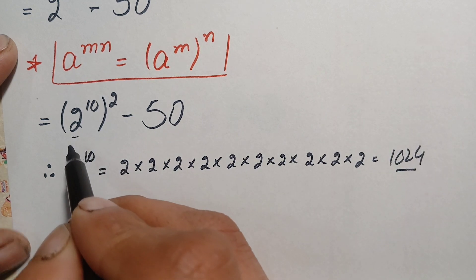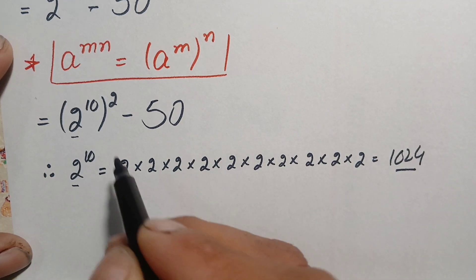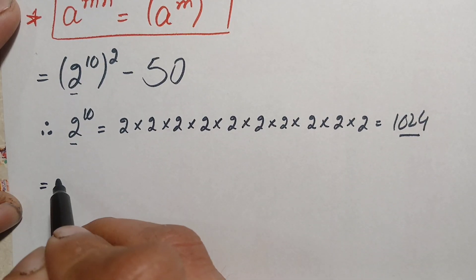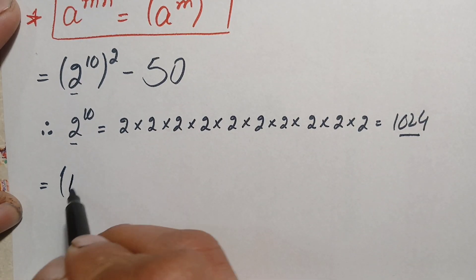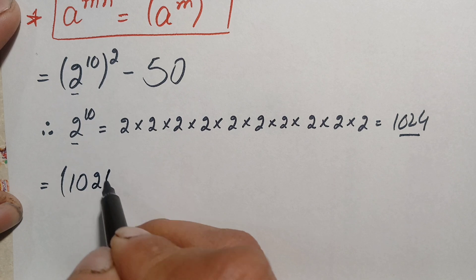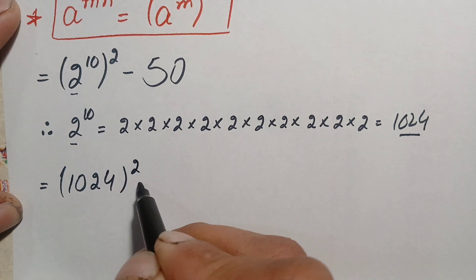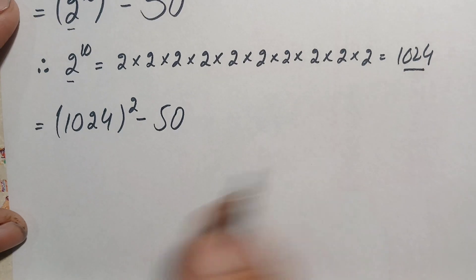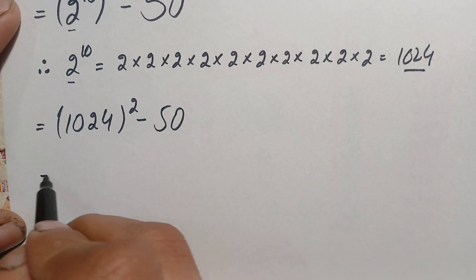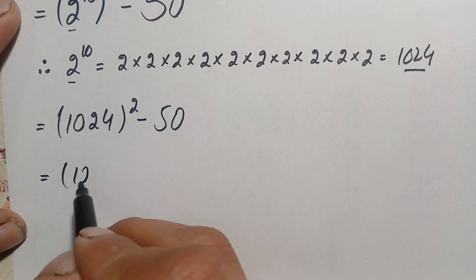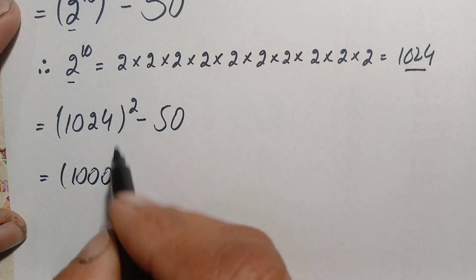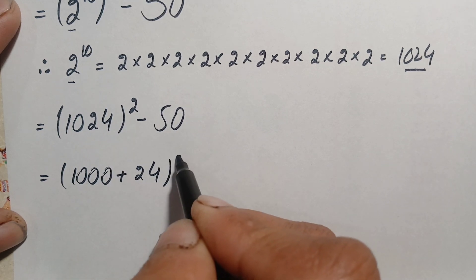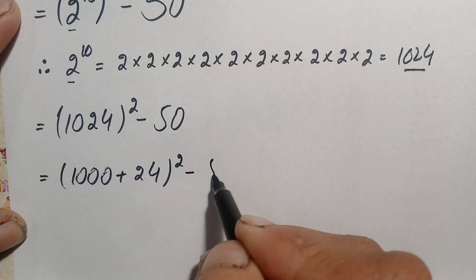We replace 2 raised to power 10 with 1024, so this becomes 1024 whole square minus 50. Next, we write 1024 as the sum of 1000 plus 24, giving us (1000 + 24) whole square minus 50.